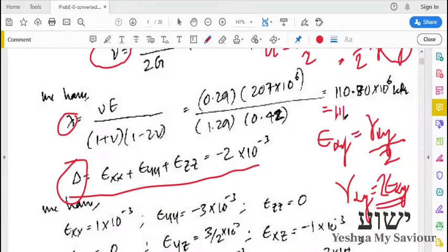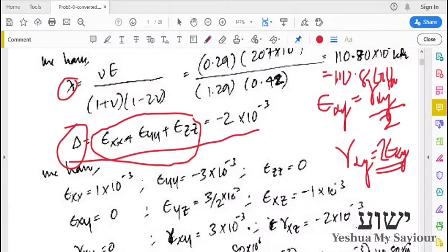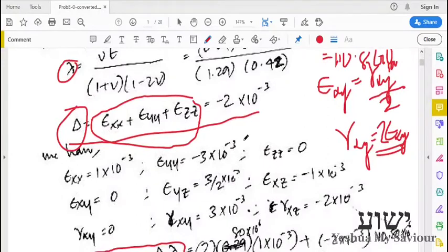Similarly, we can find dilation λ which is the sum of the diagonal components, which is 2 × 10^-3 minus 3 × 10^-3. This being a summation of strains, this will not have a unit.